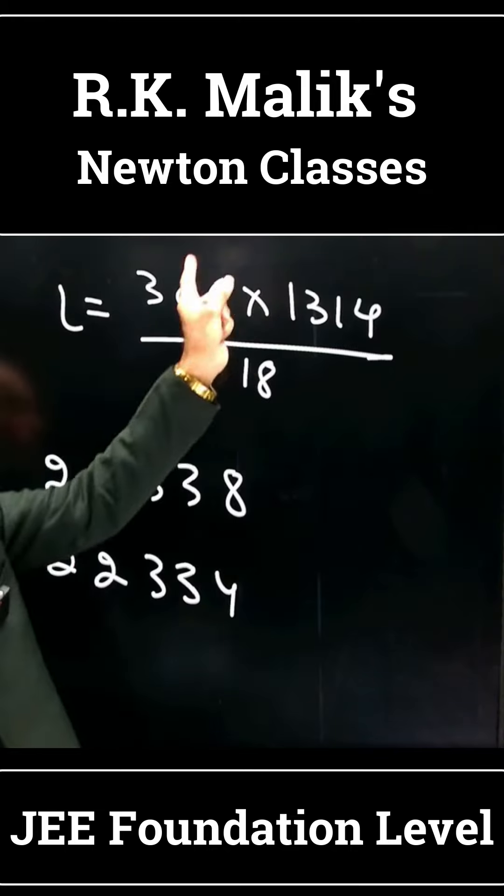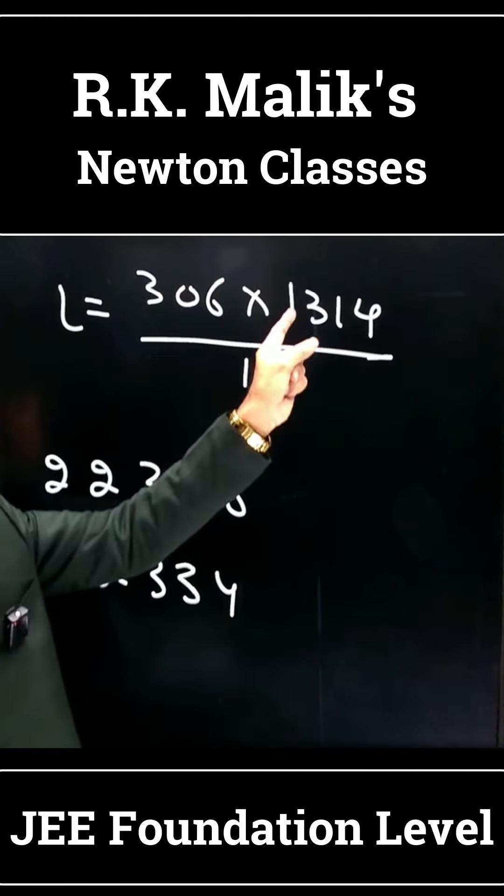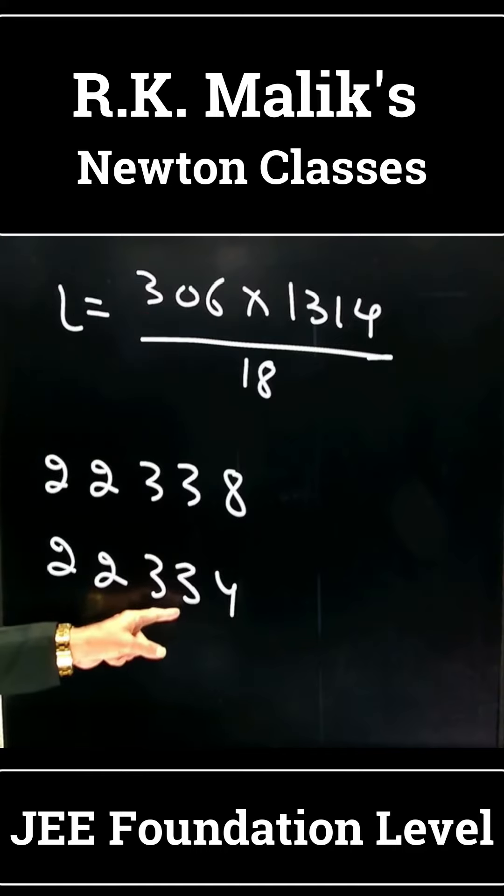This is clear that when you multiply them—6 times 4 is 24—the last digit will be 4. So this answer is not possible.